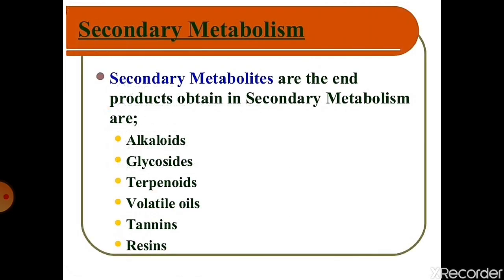We have already discussed about secondary metabolism and plant metabolism in the last video. There are two types of metabolism: primary metabolism and secondary metabolism. Here we will specifically discuss about secondary metabolism. Secondary metabolites are the end products obtained in secondary metabolism, formed from primary metabolism and primary metabolites. Secondary metabolites include alkaloids, glycosides, terpenoids, volatile oils, tannins and resins. Today we will discuss about glycosides.